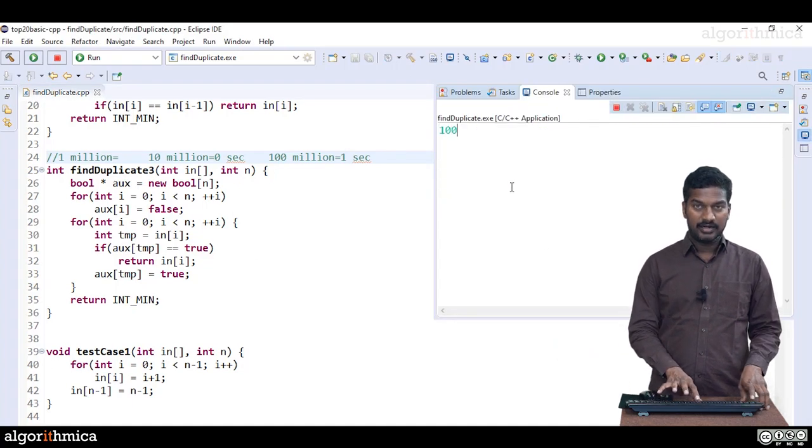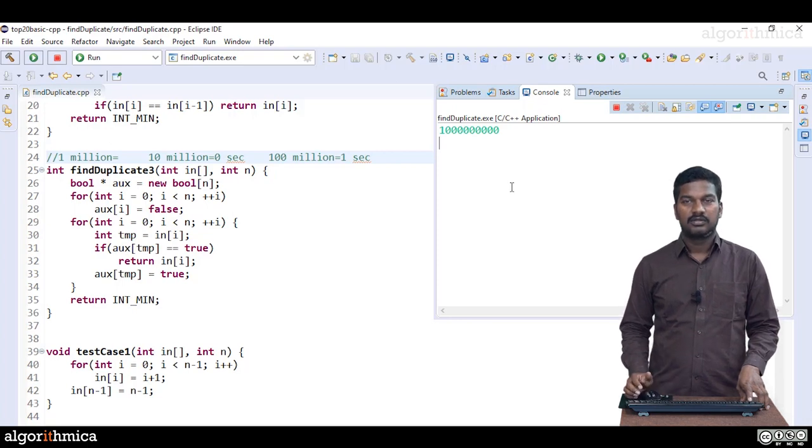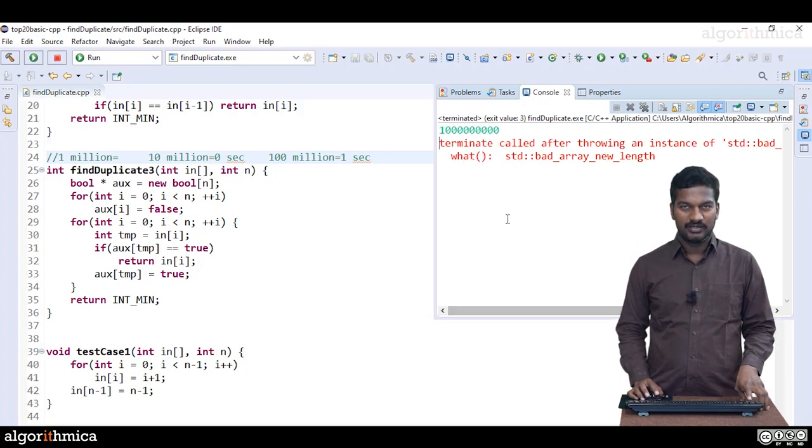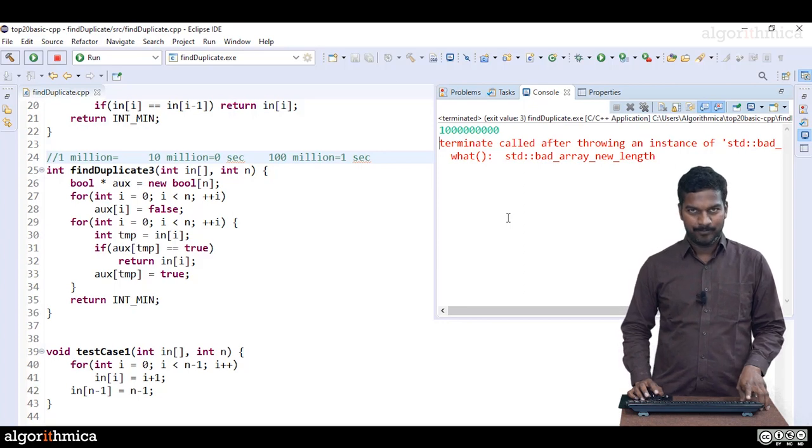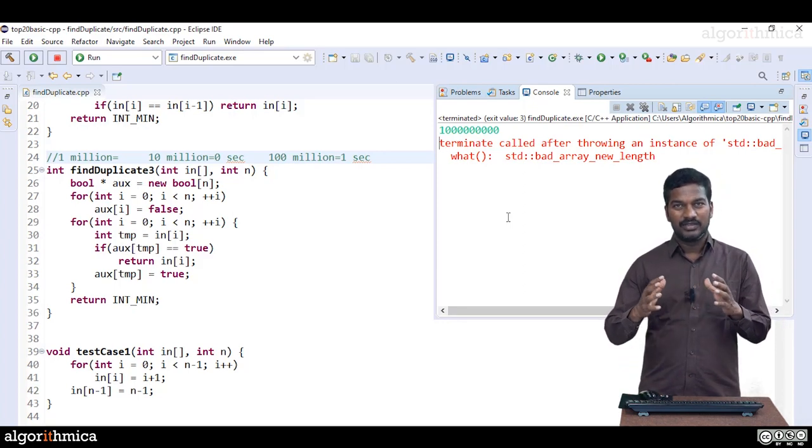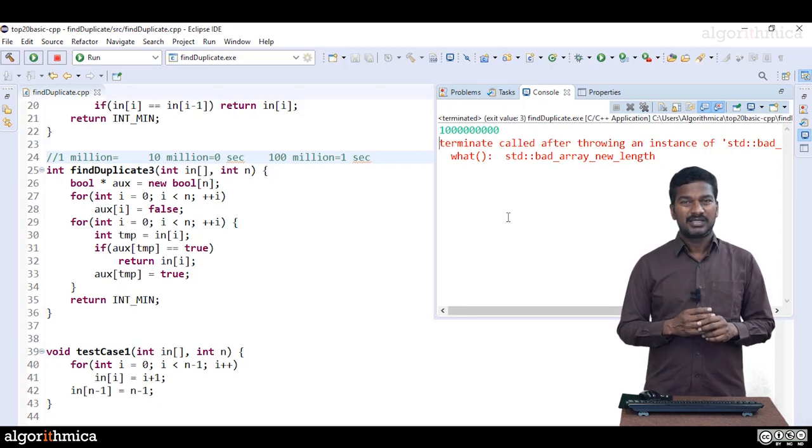Let's go for 1,000 million which is a billion. Let's see how much time this will take. 100,000, 10,000 lakh million, 10 million, 100 million, thousand million which is a billion. You can clearly see bad array new length - it is going beyond the size of the array. Normally in computer we cannot store any number with infinite capacity, there's a limit. We got the limit exceeded, that's one reason why it is throwing error.